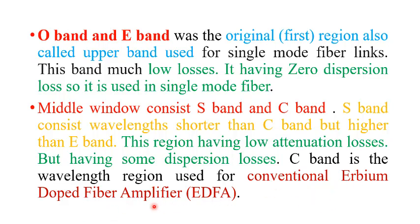What is an erbium doped fiber amplifier? An erbium doped fiber amplifier is basically a piece of fiber that works like an amplifier. Erbium is a transition metal with atomic number 68 in the F block and an atomic weight of 167.25 grams. This type of amplifier is used for amplifying the optical signal.